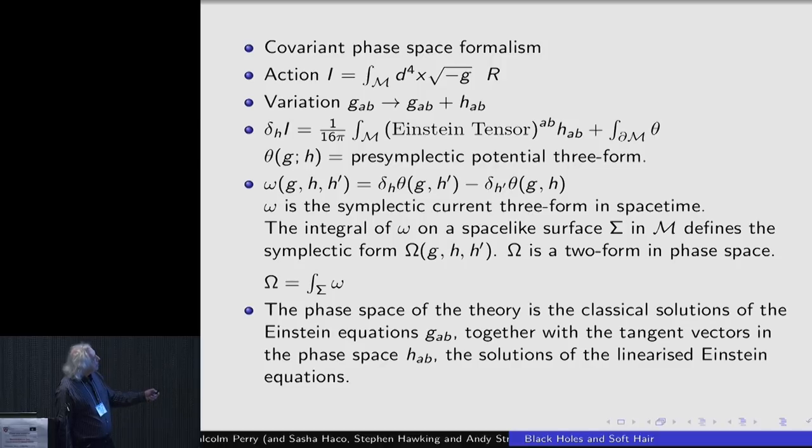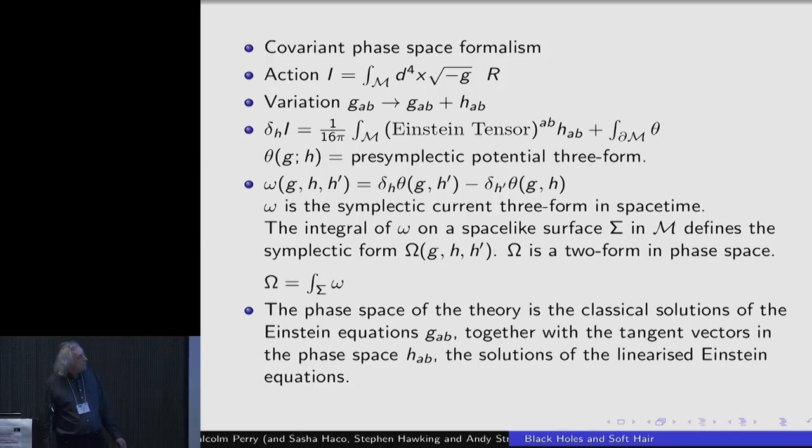So the idea is you start from the metric, you vary the metric so that you perform a small perturbation, H-AB, and then you look at how the action varies. And of course we all know that you get the Einstein tensor times H-AB together with a boundary term. The boundary term here we'll describe as a three-form in space-time. It's usually called the presymplectic potential. And the way in which you should think about this is that if you vary this thing, in a general field theory, what you'll get is, as a boundary term, something like the sum over all canonical momenta and coordinates, something like P delta Q. So you want to think of this term here, the presymplectic potential, as being like P dq.